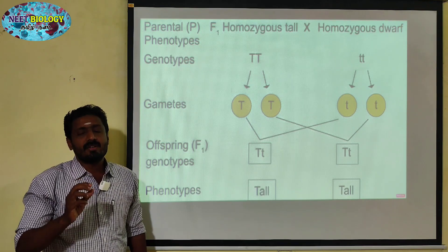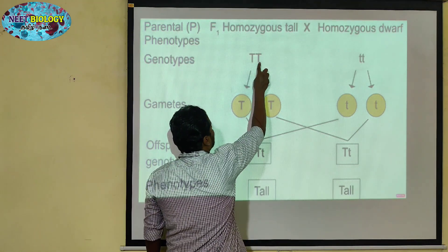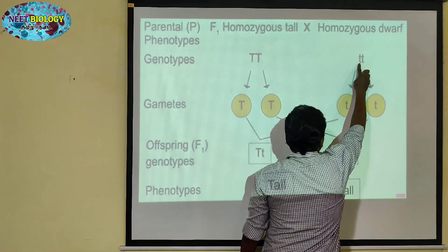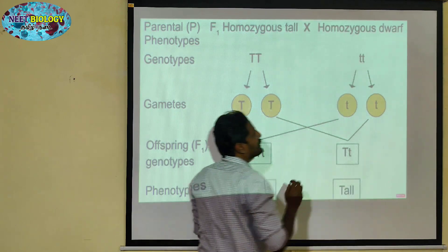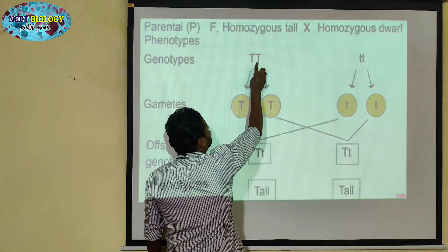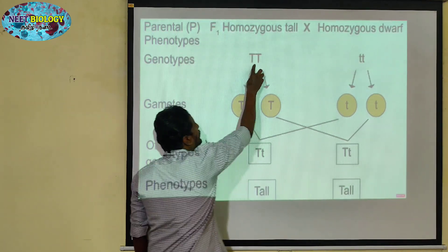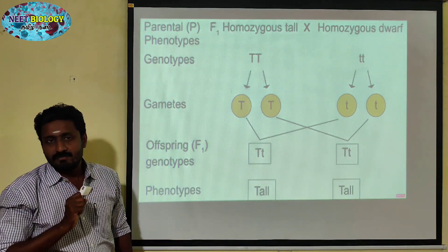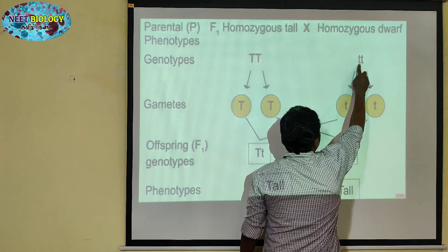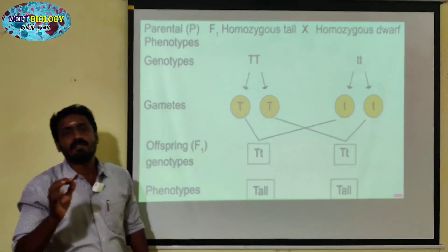Tallness of a pea plant: capital T capital T — that is the gene for tallness. Small t small t — that is the gene for dwarfness. Capital T is one allele, small t is another allele, and together they represent one gene. So capital T and small t are two alleles of the same gene.